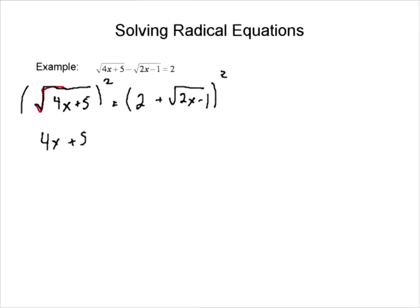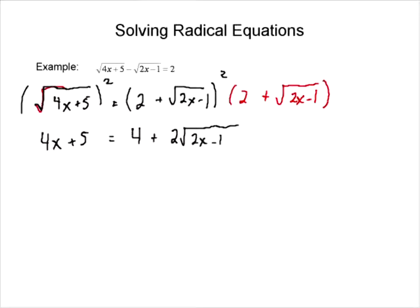So this is going to become 4x plus 5. And the other side — if we square this out, I'm just going to show you what happens when we square 2 plus the root of 2x minus 1. We have to FOIL this out, so we're going to get 4 plus 2 square root of 2x minus 1, plus 2 square root of 2x minus 1, plus 2x minus 1 squared.